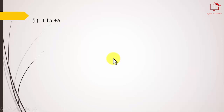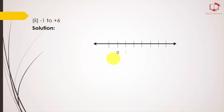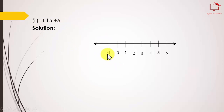Part 2: minus 1 to positive 6. Same as before, we will draw a straight line and mark points with equal distances. Then we assign numbers 1, 2, 3, 4, 5, 6 on the right side and minus 1 on the left side of zero. These are the numbers from minus 1 to 6, represented using the number line.